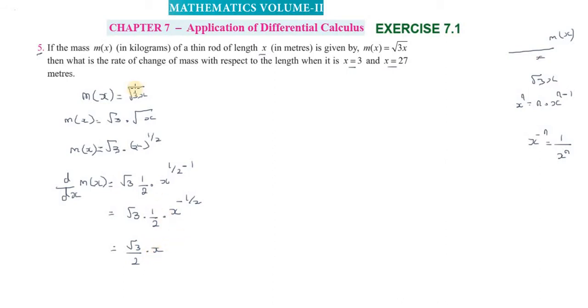So we get (√3/2) · (1/x^(1/2)) = (√3/2) · (1/√x). This is our derivative d/dx of m(x).